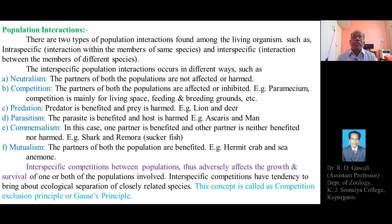There are two types of population interactions found among living organisms: intraspecific population interaction, that is interaction taking place between the members of the same species, and interspecific population interaction, that is interaction between the members of different species.